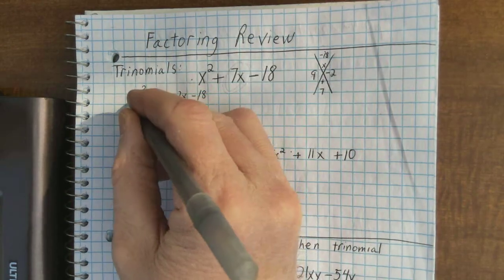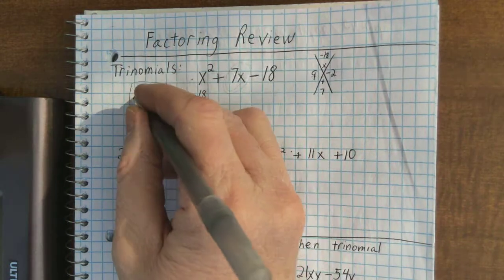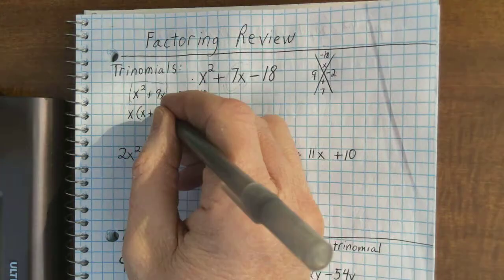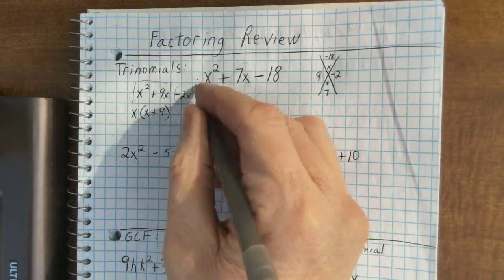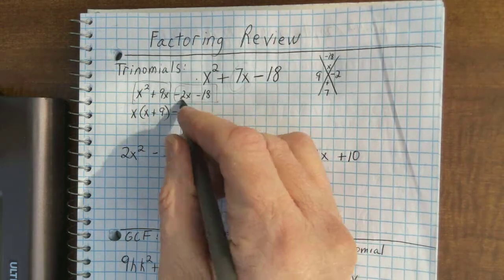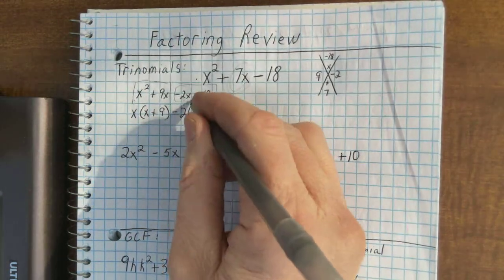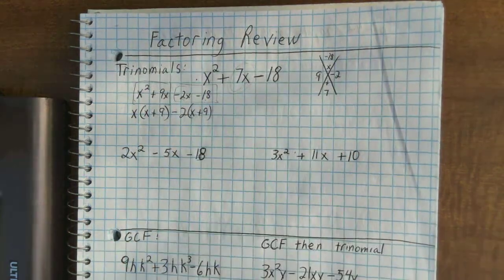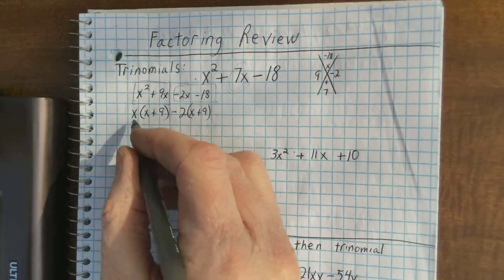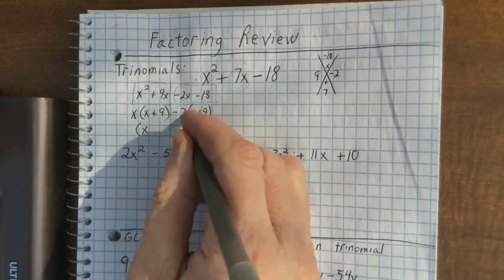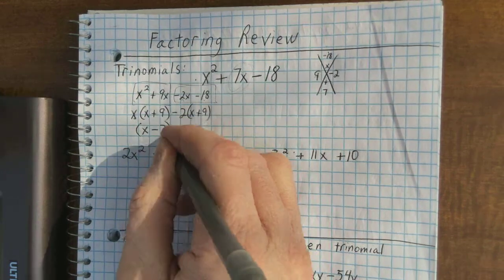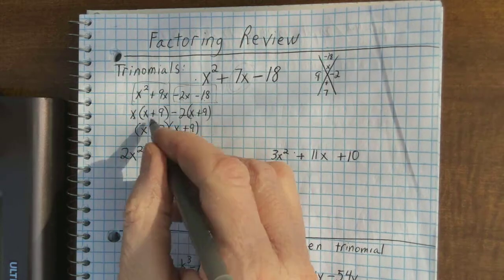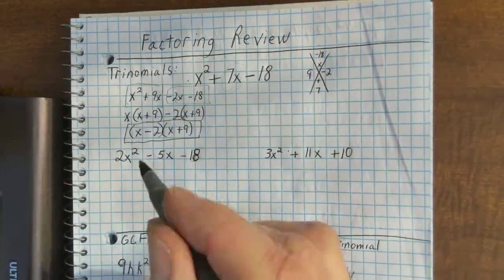So all I do when I do this is a way to split this middle term up, the x terms up. And then with these two, x is a common factor. And I'll write x plus 9 here. With these two, negative 2 is a common factor. And negative 2 times x and negative 2 times positive 9 gives me negative 18. And then my final step, these terms that are in front, the x and the minus 2. And then our common, this doesn't work if these aren't the same. So that's how we roll there.